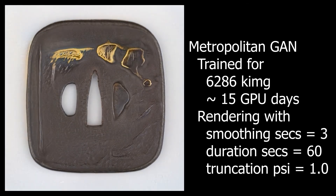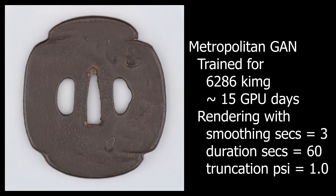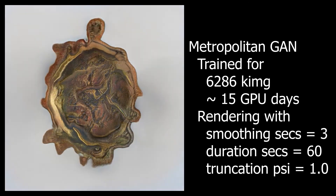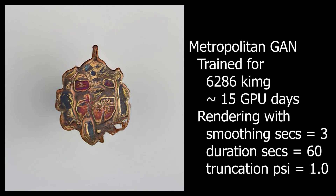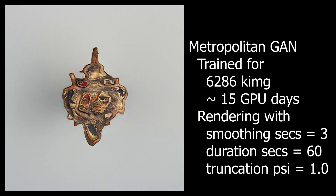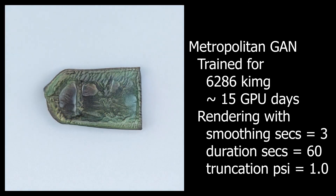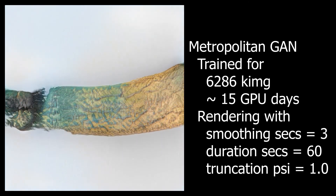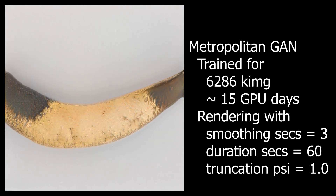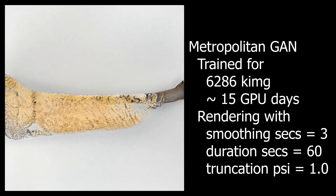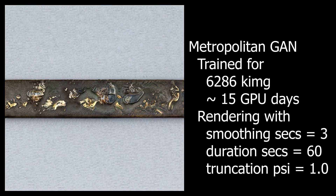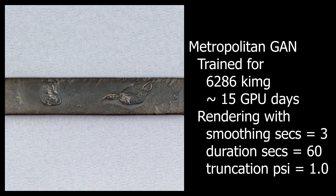Welcome to this guided hallucination that is the Metropolitan GAN rendering. The specific GAN model on display was trained for about 15 GPU days, and the video on screen was rendered with a smoothing of three seconds, a duration of 60 seconds, and a truncation of one.